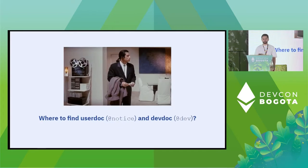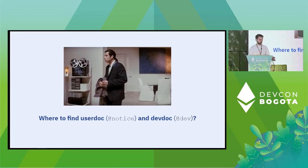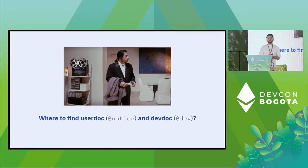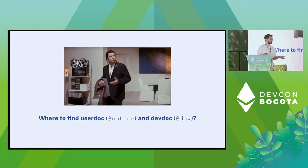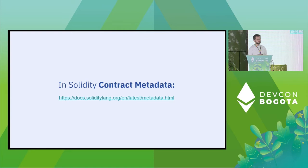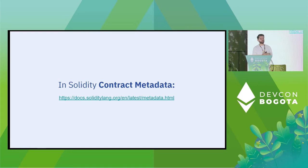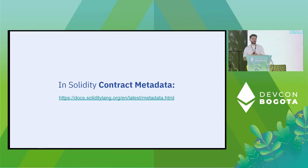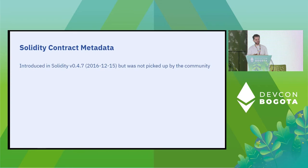So you did your job — you made the user documentation and developer documentation. Where do you find it? It is in the Solidity contract metadata. Contract metadata is something introduced early on in 2016 in the earlier versions, but it was not really picked up by the community. It is a JSON file generated by the compiler itself and it contains the metadata.